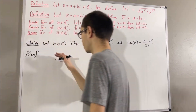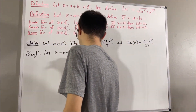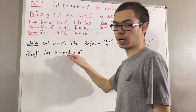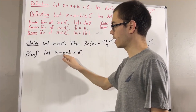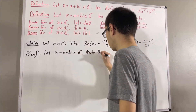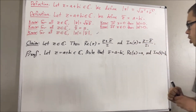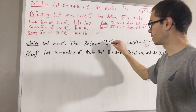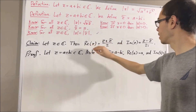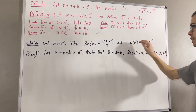Let's give ourselves a complex number z equals a plus bi. In this case, z bar equals a minus bi, the real part of z is a, and the imaginary part of z is b. We're going to show that z plus z bar over 2 simplifies down to a, and then show that z minus z bar over 2i simplifies down to b.